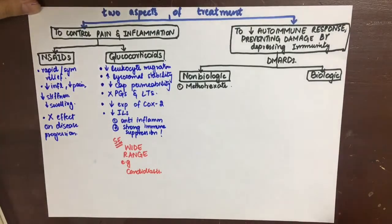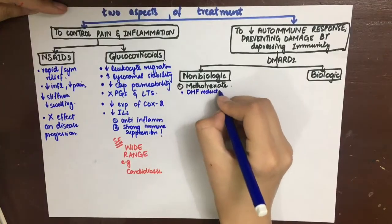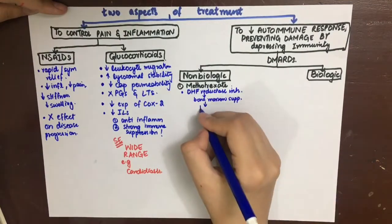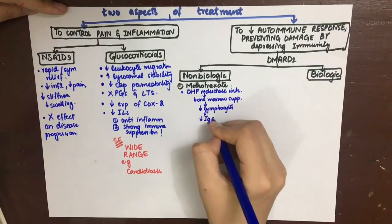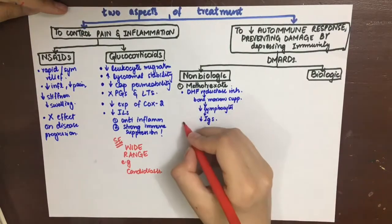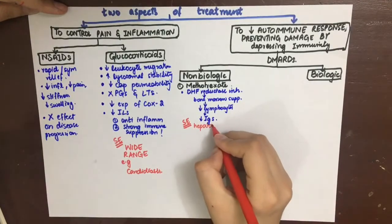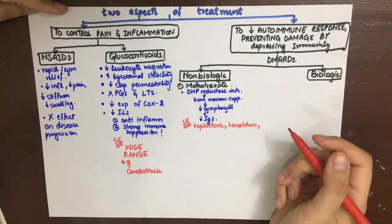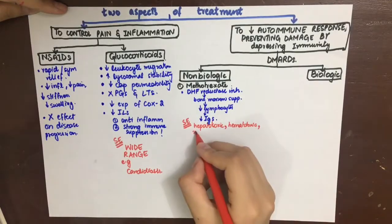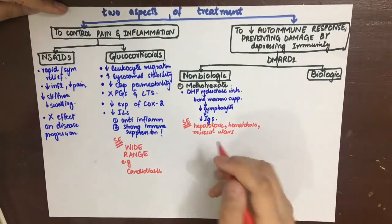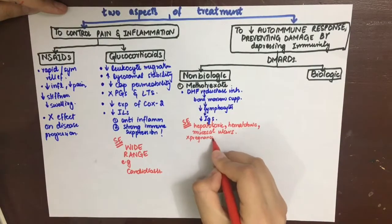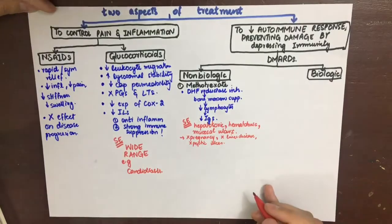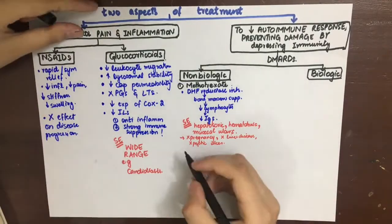The first non-biologic DMARD to discuss is methotrexate. It is cytotoxic to lymphocytes by being a dihydrofolate reductase (DHFR) inhibitor and folate antagonist. It inhibits the bone marrow lymphocytes, thus decreasing the amounts of antibodies produced. Side effects include hepatotoxicity and hematotoxicity because blood cells are dividing; liver function needs to be monitored. It causes mucosal ulcers and is contraindicated in pregnancy, liver disease, and peptic ulcer. Side effects can be minimized by administration of folic acid.